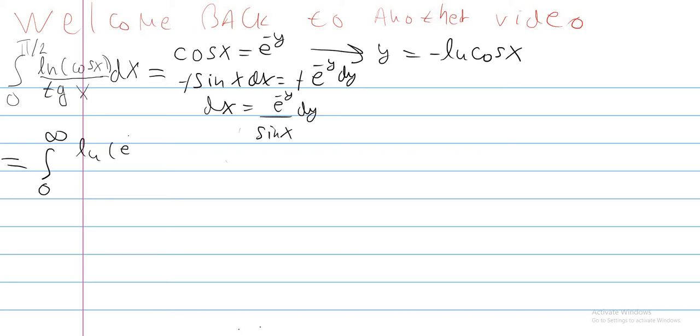We have ln of e to the minus y here. This expression turns out sine over cosine, so we have cosine of x here, divided by sine of x, and multiply it with e to the minus y dy over sine of x. So we have sine of x times sine of x. What's that? That's sine squared of x.